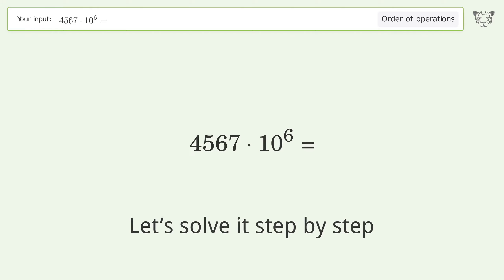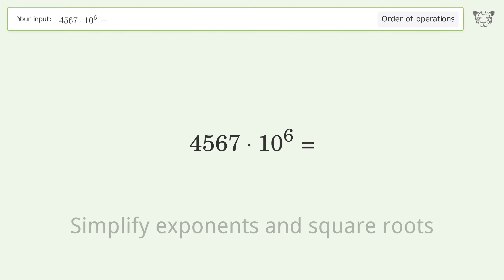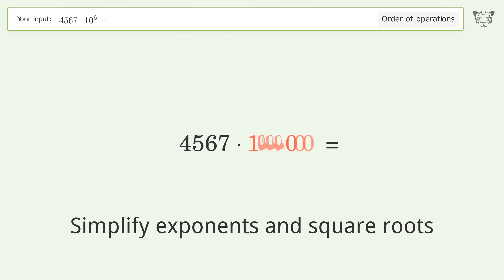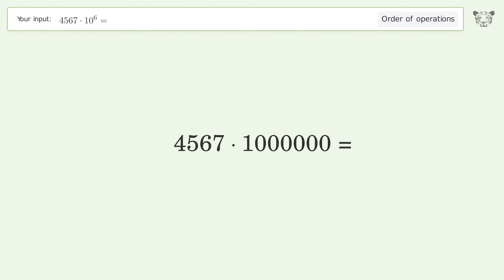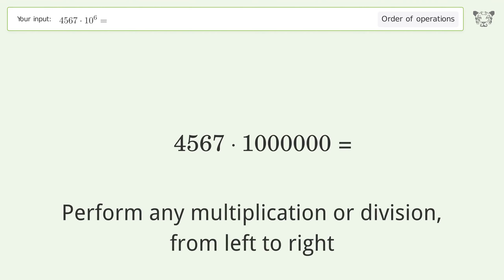First, simplify exponents and square roots: 10 to the power of 6 equals 1,000,000. Next, perform any multiplication or division from left to right.